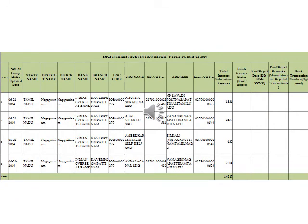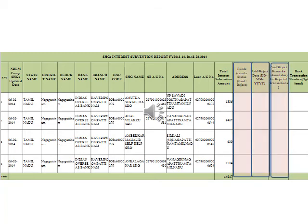After transfer of the interest subvention amount to the SHG accounts, request the NRLM bank to furnish the details of successful transfer by filling up the last four columns of the report as highlighted. Please inform each SHG about the amount of interest subvention transferred. Block level staff must ensure that the details of interest subvention transferred to each SHG are entered in their minutes book. A report on the amount of interest subvention transferred to SHGs may also be shared with village organizations and the respective bank branch.